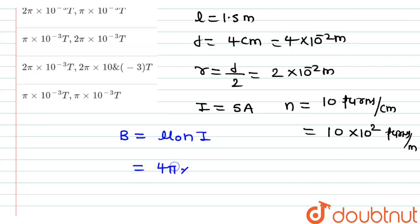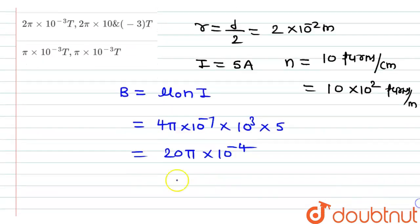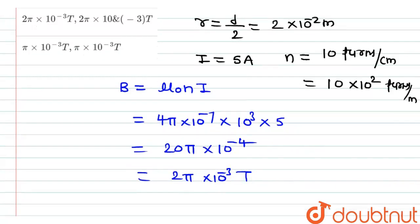The value of μ₀ is 4π × 10⁻⁷, multiplied by the number of turns per unit length 10³, multiplied by current 5. So 5 × 4 = 20, giving 20π × 10⁻⁷⁺³ = 20π × 10⁻⁴ = 2π × 10⁻³ tesla. This is the value of magnetic field inside the solenoid.